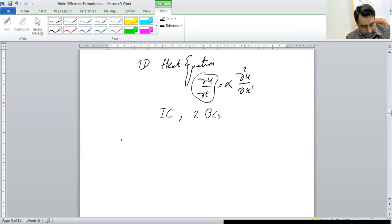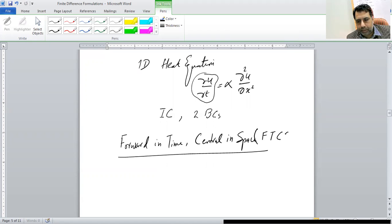The first scheme that I would like to share is the forward in time and central in space, also abbreviated as FTCS - forward in time central in space. Let me give you some notations that I will be following. This is the unknown U. For the space coordinates, I will use subscript, and for the time coordinate, I'll use superscript.